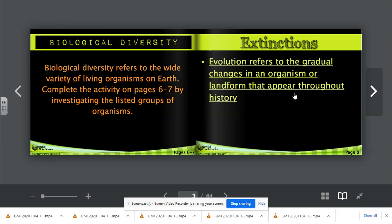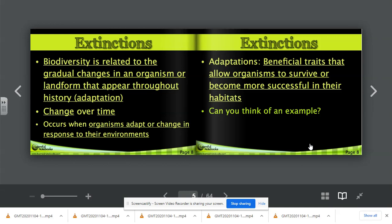Page eight, extinctions. Evolution refers to the gradual changes in an organism or landform that appear throughout history. We know that evolution happens by looking at the fossil record. Biodiversity is related to the gradual changes in an organism or landform that appear throughout history. This is known as an adaptation. Think of it this way: Adaptations allow organisms to adapt and survive. It's all about survival. Think of changes over time.